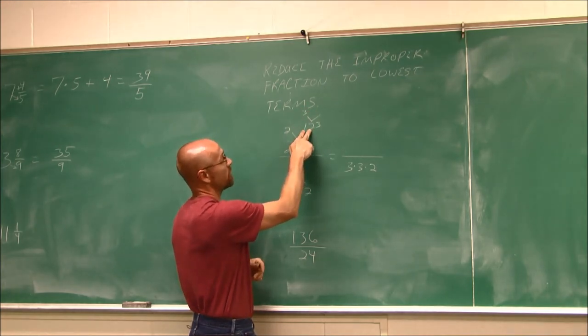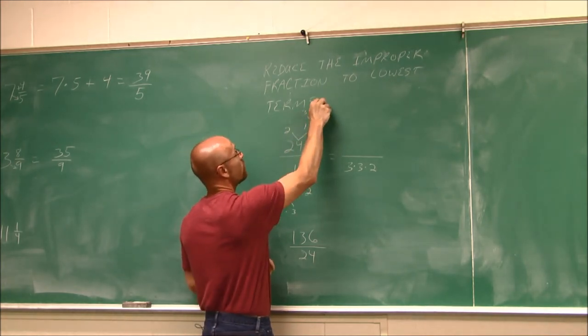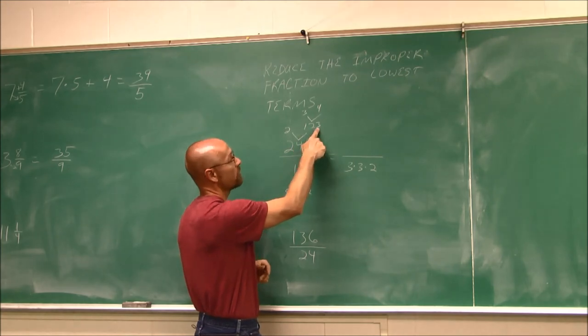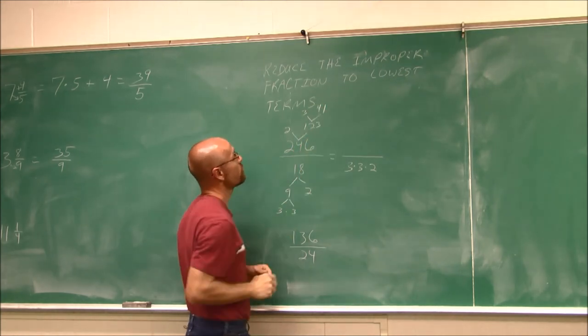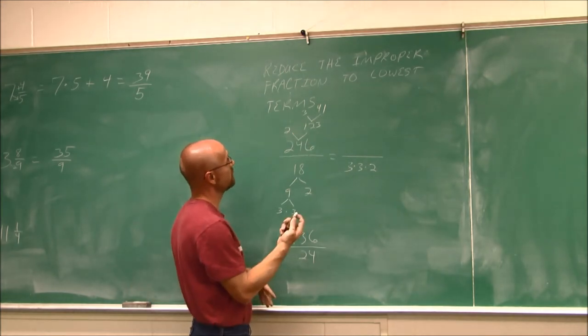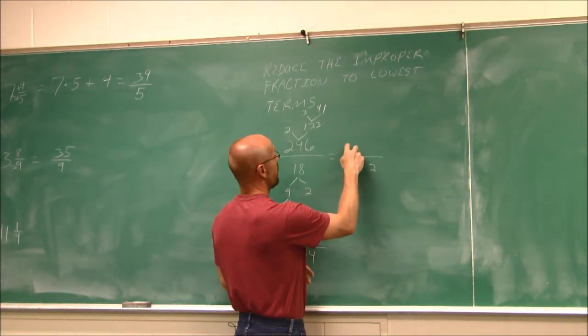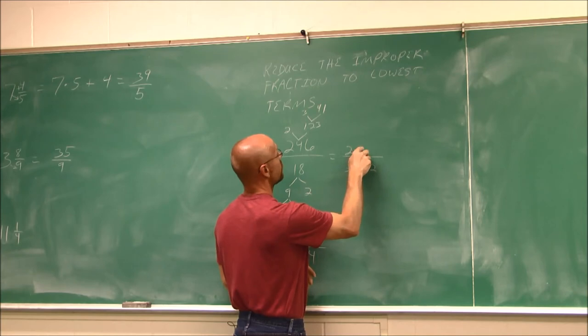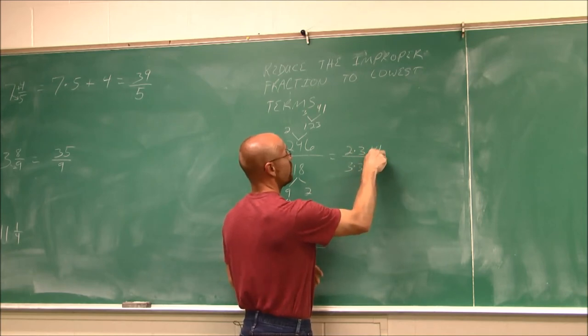3 doesn't go into 1. But it does go into 12, 4 times with no remainder. 3 goes into 3 once. So now I'm going to rewrite this. 41. Yeah, that's prime. So we have 2 times 3 times 41.